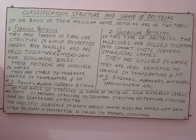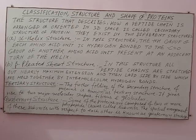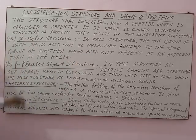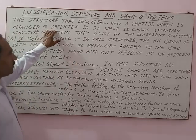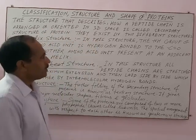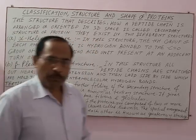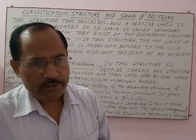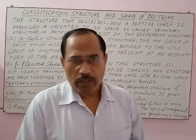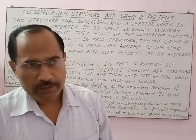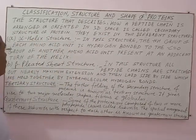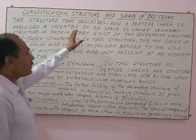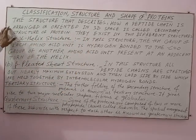Regarding the secondary structure of protein: the structure that describes how a peptide chain is arranged or oriented in three-dimensional space is called secondary structure. In the primary structure there is a sequence of arrangement of amino acids in the polypeptide chain, whereas secondary structure describes how the peptide chain is oriented in three-dimensional space.